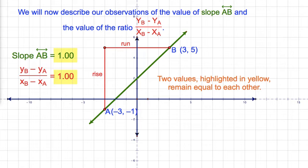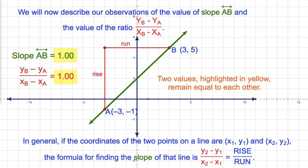The two values highlighted in yellow remain equal to each other. In general, if the coordinates of two points on a line are (x1, y1) and (x2, y2), the formula for finding the slope of that line is the difference of the y-coordinates of points 2 and 1 divided by the difference of the x-coordinates of points 2 and 1.